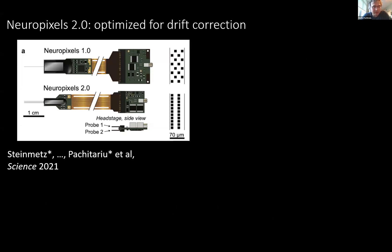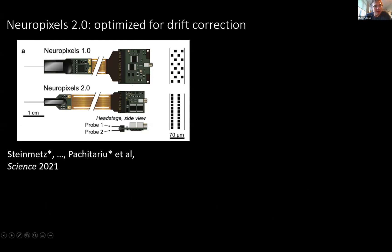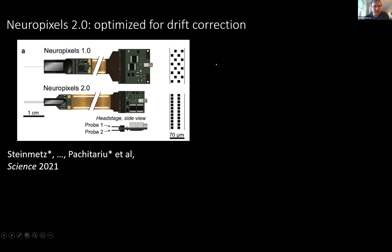Kilosort is best understood in relation to this hardware that was built at Janelia with collaboration from universities around the world. It's called Neuropixels. It's a silicon probe for recording extracellularly from neurons with electrophysiology — voltage signals. This has had two versions on its own. Kilosort development has kept pace with the Neuropixels development and informed it in some cases. For example, some adaptations of this probe are motivated by the analysis side that happens on the data that comes from Neuropixels probes.